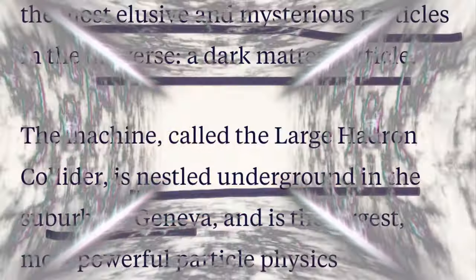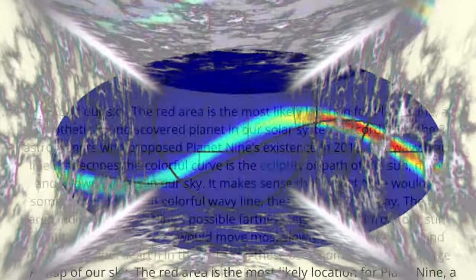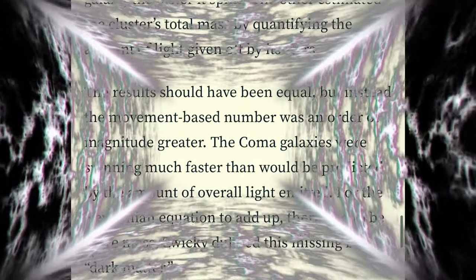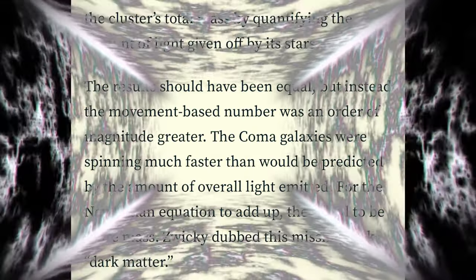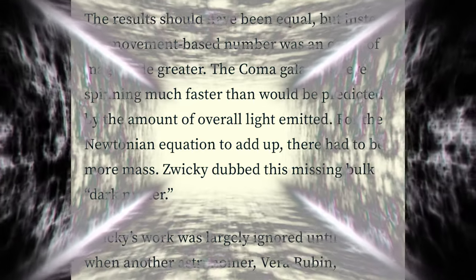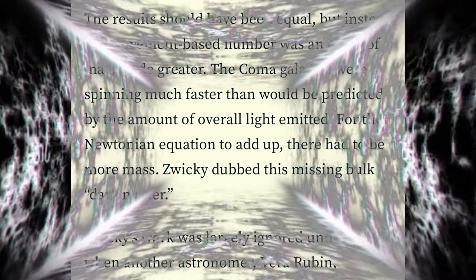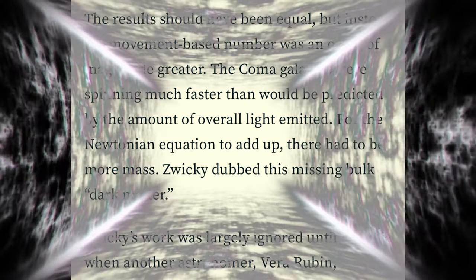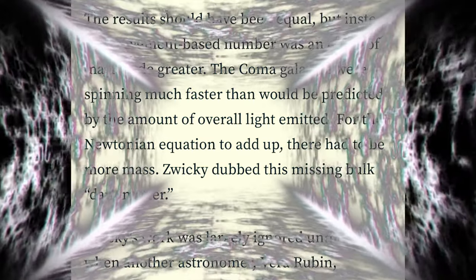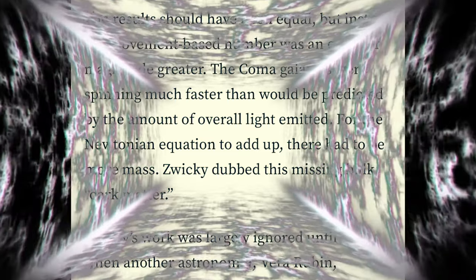The name comes from Fritz Zwicky, a Swiss astronomer who in 1933 used two well-established methods to calculate the mass of the Coma Cluster, a group of more than a thousand galaxies. The other estimated the cluster's total mass by quantifying the amount of light given off by its stars. The results should have been equal, but instead the movement-based number was an order of magnitude greater. The Coma galaxies were spinning much faster than would be predicted by the amount of overall light emitted. For the Newton equation to add up, there had to be more mass, and that's how they dubbed this missing bulk as dark matter.